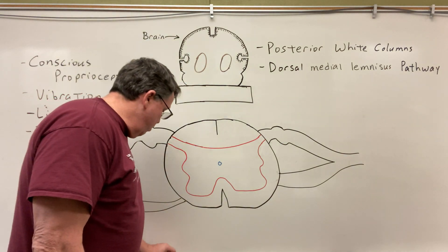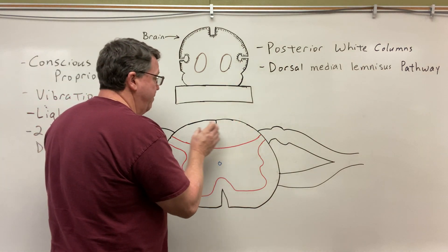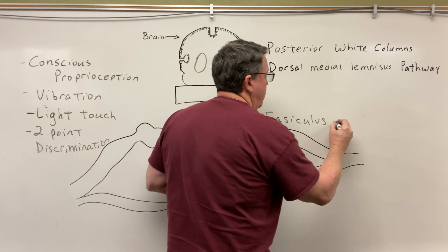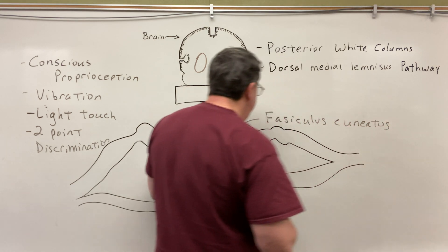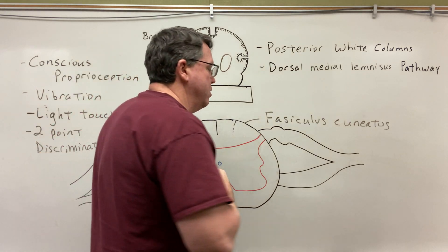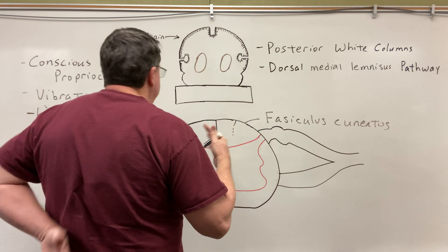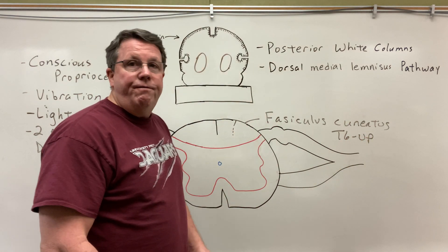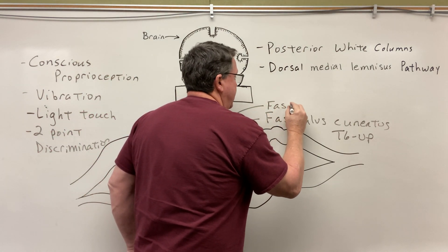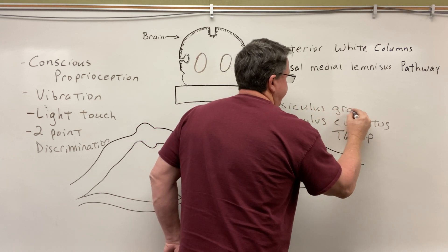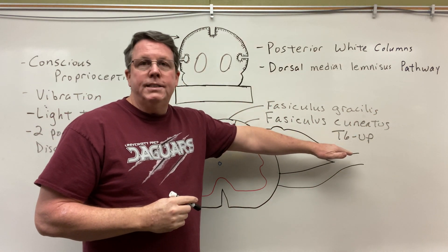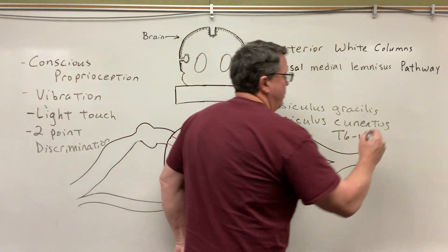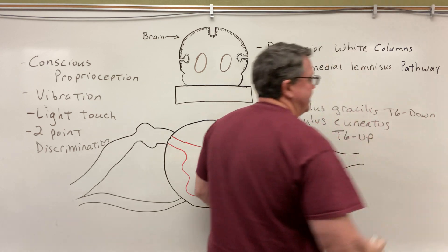In the posterior white columns, we have two parts of the pathway. One of them is called the fasciculus cuneatus. This is going to feel sensations from basically T6 going up. So this is about T6 right here. It's going to feel any sensations of these as it goes up towards the head. We're going to say this goes from T6 up. And then from basically the feet up to T6, that's going to be carried by the fasciculus gracilis. Once we get below T6, you don't really have the fasciculus cuneatus anymore. Below T6 we're just going to have the fasciculus gracilis. Technically it's from the feet up to T6.